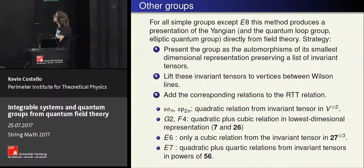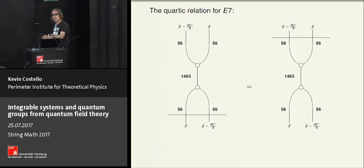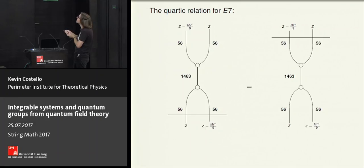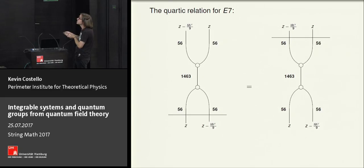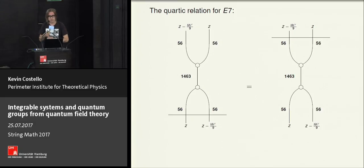For E7, there's a quadratic and a quartic relation. The interesting new quartic relation can be viewed as a projection onto the 463-dimensional representation of E7. We calculate the two-loop anomaly — it vanishes for this representation. There's a cubic vertex; we calculate the angles between it using the formula for the Casimirs. This configuration equals another configuration, and you find an explicit formula for a relation that gives you the Yangian of E7.